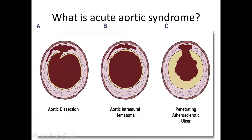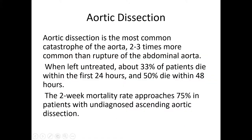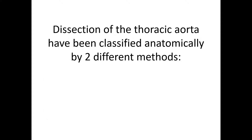We cannot always know what started first — it may have started with a penetrating ulcer and then proceeded to aortic dissection, or it may have started with intramural hematoma and then become an ulcer or dissection. Aortic dissection is the most common catastrophic event of the aorta, two to three times more common than rupture of the abdominal aorta. If left untreated, 33% of patients die within the first 24 hours and 50% die within 48 hours. The two-week mortality rate approaches 75% in undiagnosed ascending aortic dissection.